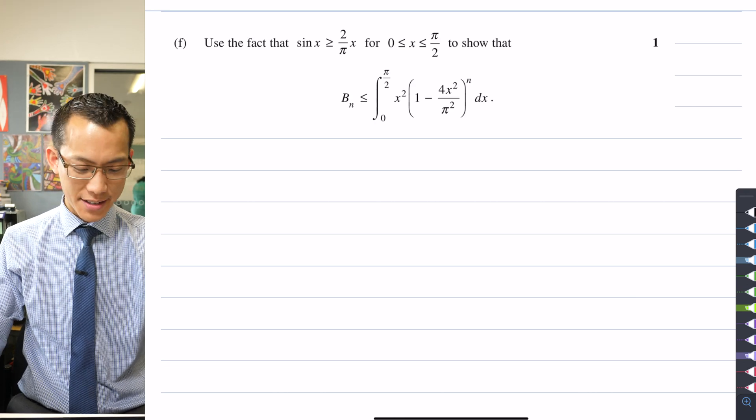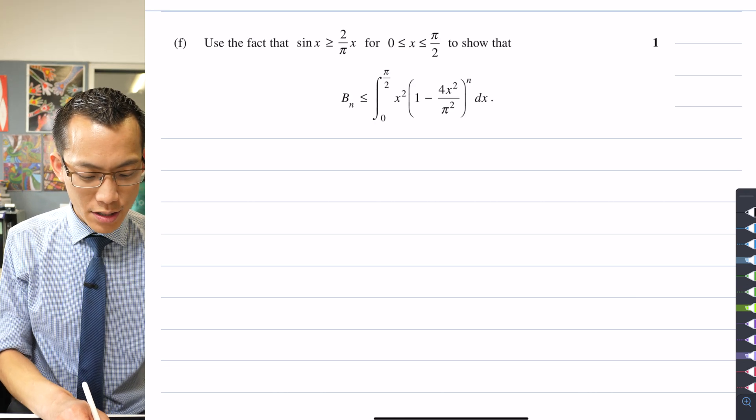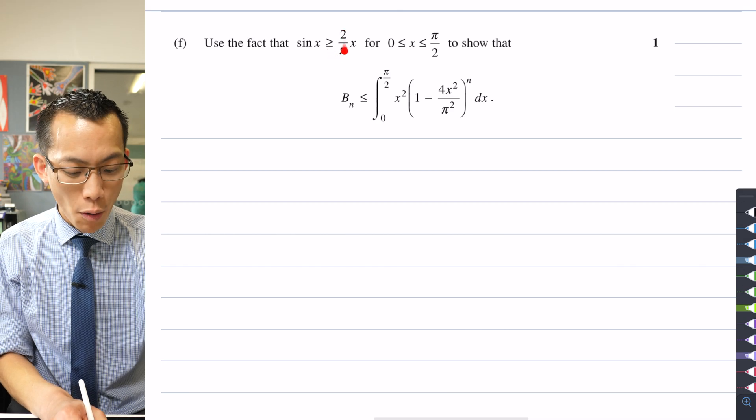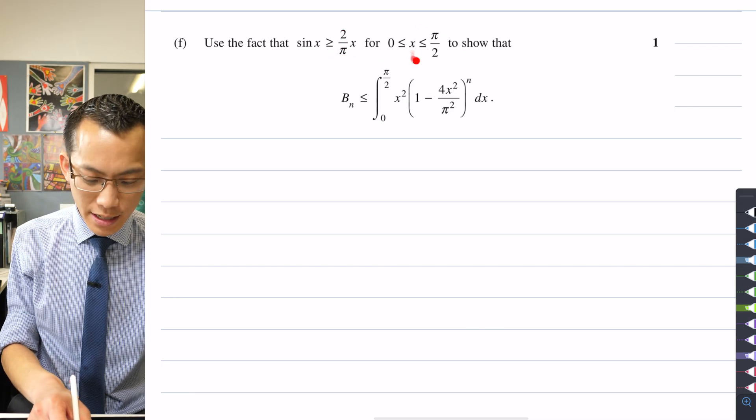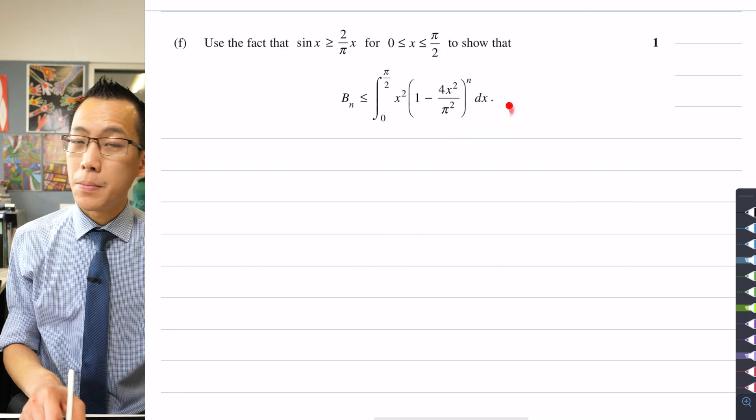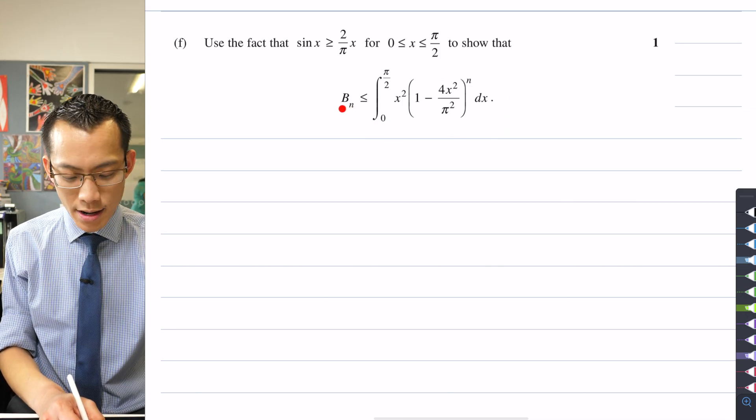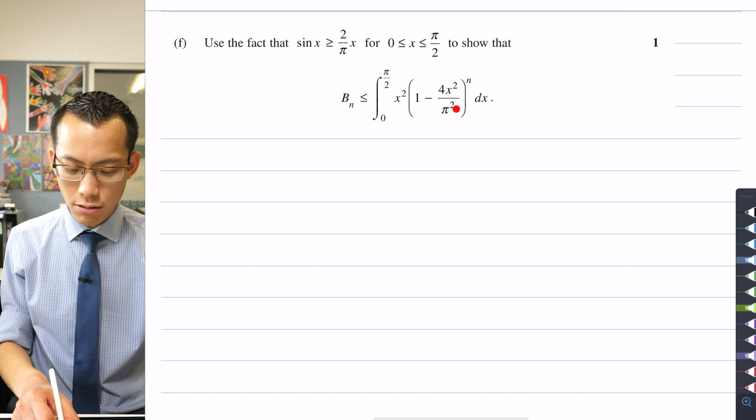All right, on to part f. What's it asking us? Use the fact that sine x is greater than or equal to 2 over pi times x in this particular domain to show that this particular inequality is true. So you can see we're relating B_n to this unusual looking integral here.